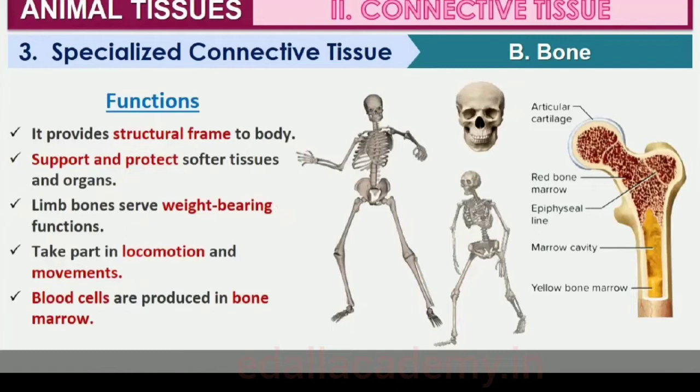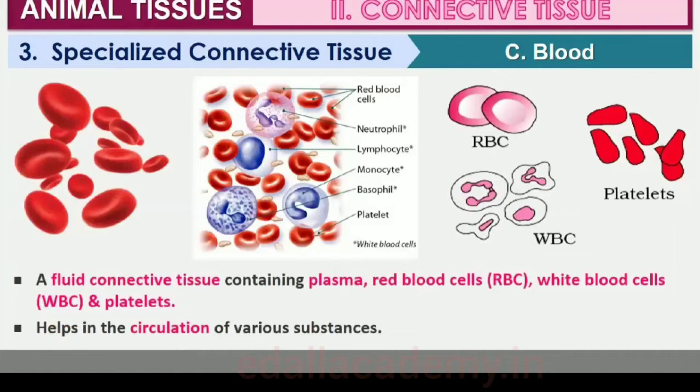The bone marrow in some bones is the site of production of blood cells. Blood is a fluid connective tissue containing plasma, red blood cells (RBC), white blood cells (WBC), and platelets. It is the main circulating fluid that helps in the transport of various substances. You will learn more about blood in chapters 17 and 18.